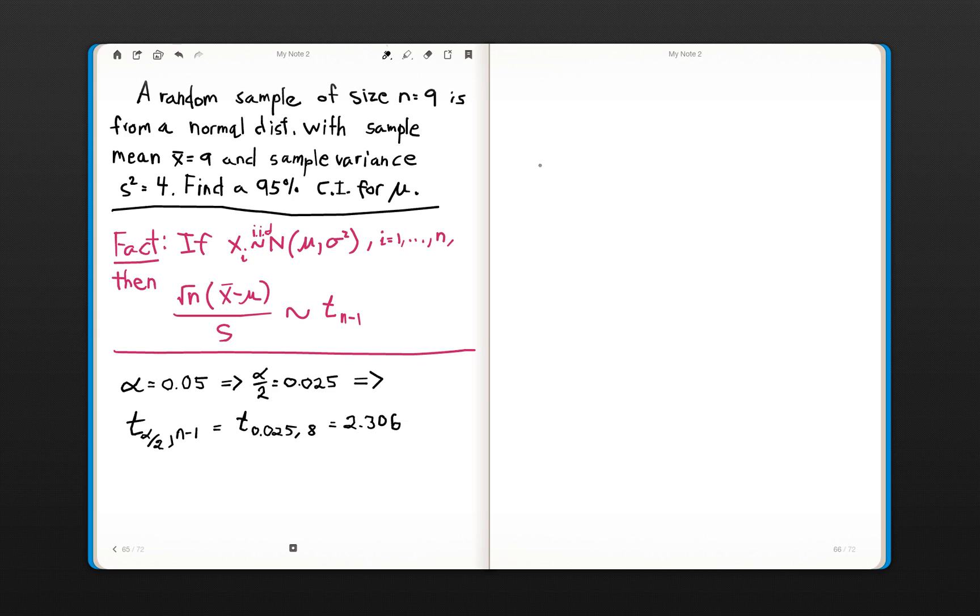And that's taken into account with the degrees of freedom right here. All right, so, let's just go ahead and do that, for completeness. It's always nice to draw the t distribution. Of course, it is mound-shaped, just like the z, but it just has wider tails.